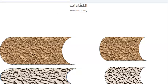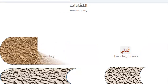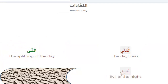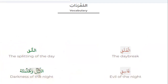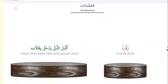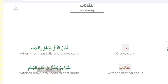Now let's study together the vocabulary of the Surah. Number one: Al-falaq means the splitting of the day. Ghasiqin means darkness of the night. Waqab means when the night falls and grows dark. Al-naffathati means witches who blow into knots to cast spells.